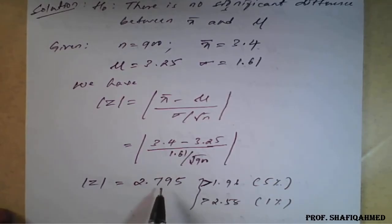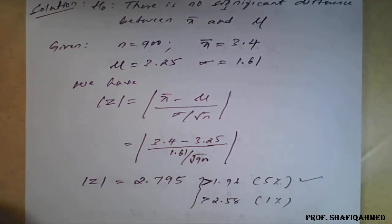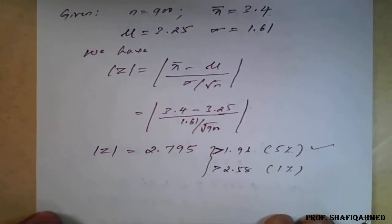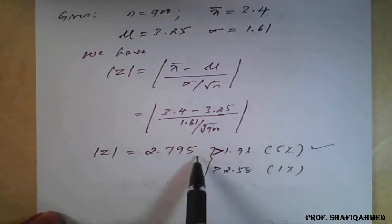In both cases, this value is rejected because 2.795 > 1.96 for 5% and 2.795 > 2.58 for 1%. Usually, you would test for 5% only if they have not given any level of significance. At that time, you can conclude directly.